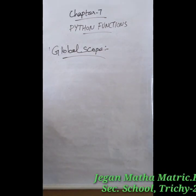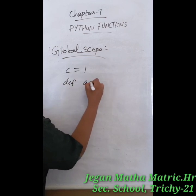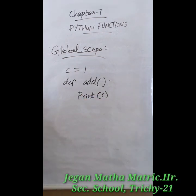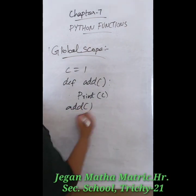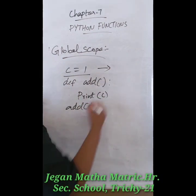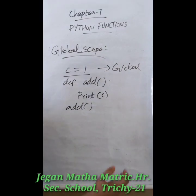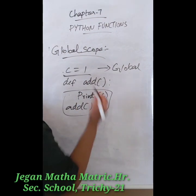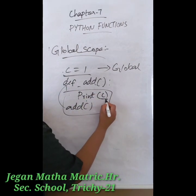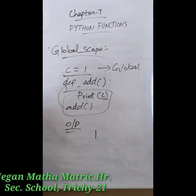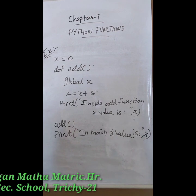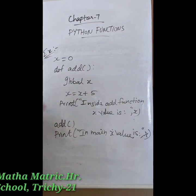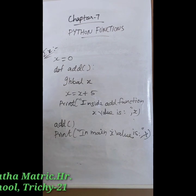Let us see the example program for global variables: `c = 1`, then `def add():`, then `print(c)`, then call `add()`. Here we define c as a global variable, so we can use it anywhere in the program — either inside or outside the function. Inside the function block, we print c, and since c equals 1, the output of the program is 1.